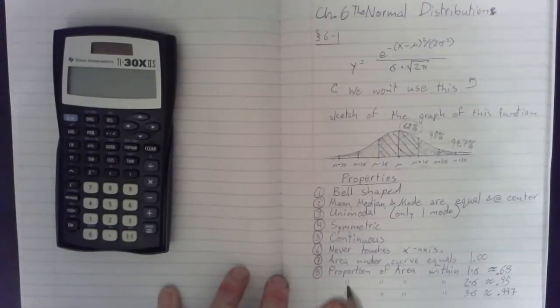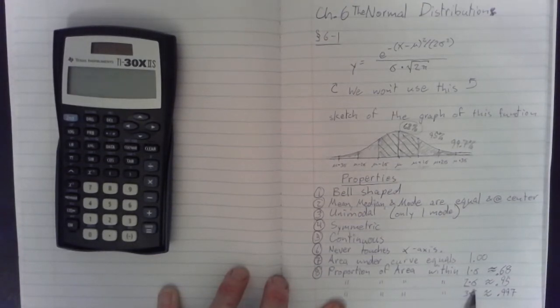All right? Then, as you can see, it kind of says here, ditto. The proportion of area within two copies of sigma, the standard deviation, is approximately equal to 0.95.